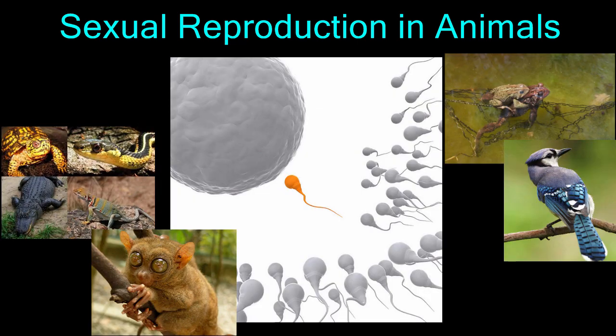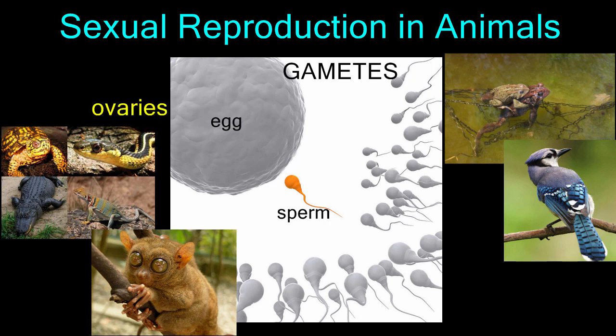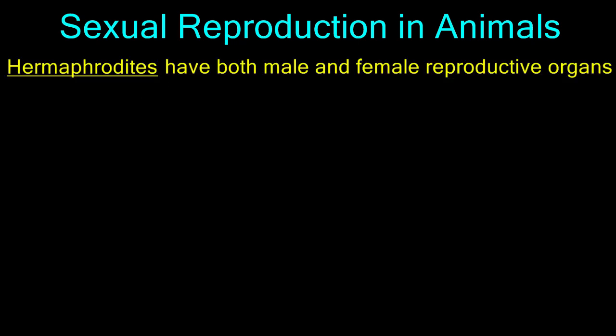In the animal kingdom, sexual reproduction begins with the formation of gametes — egg and sperm. Eggs are produced in organs called ovaries, and sperm are produced in organs called testes.